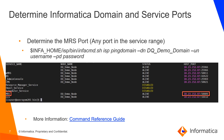Lastly, we need to find what port the MRS is running on. You can find this by running InfaCommand ISP ping domain from the Informatica server. In this example, the MRS is currently running on port 5009. Full usage instructions of this InfaCommand can be found in our command reference guide.